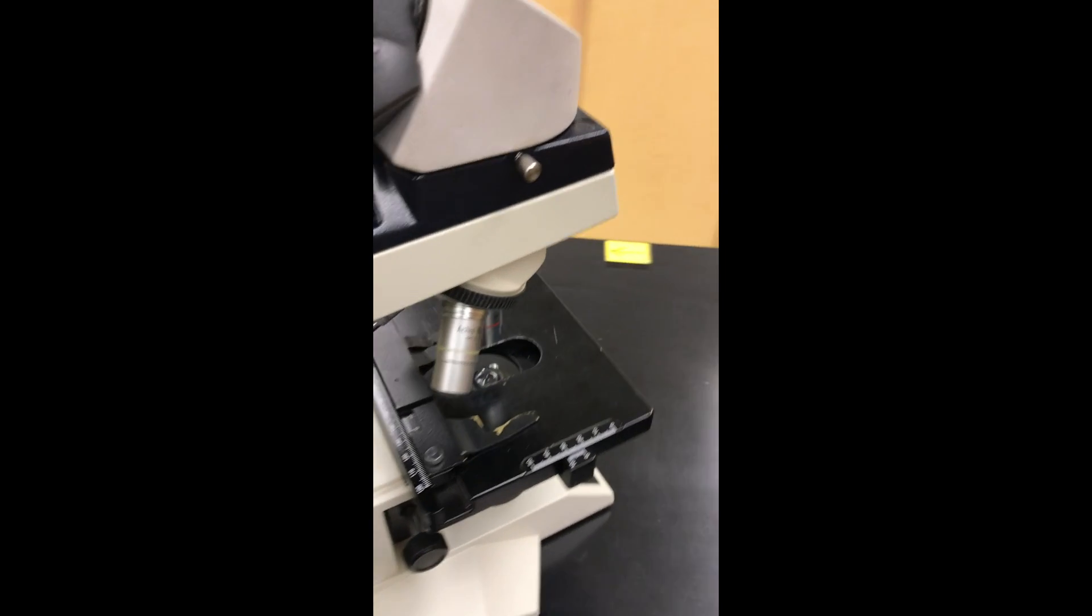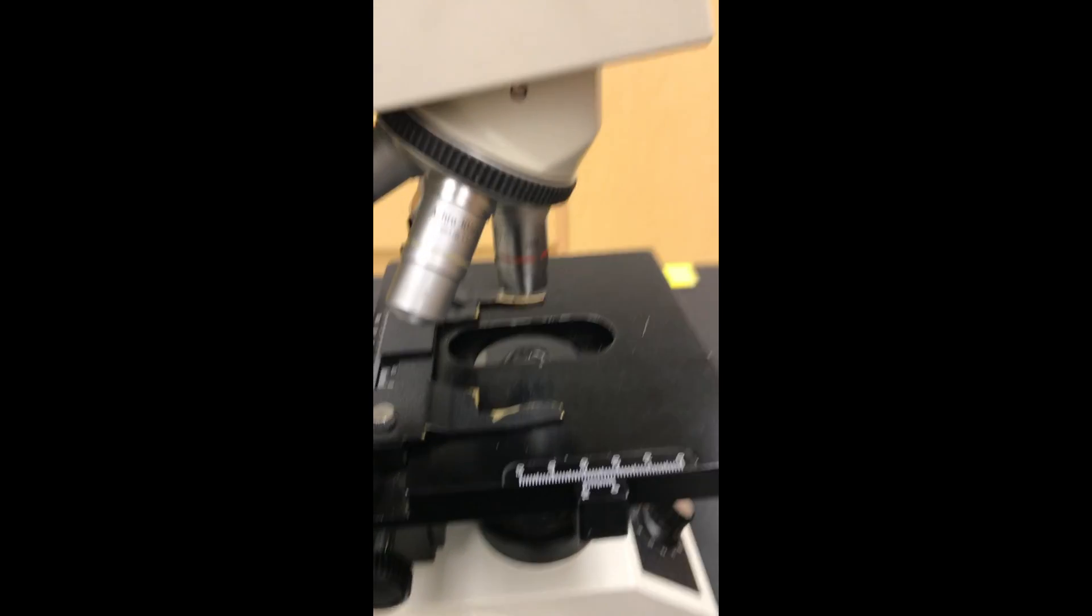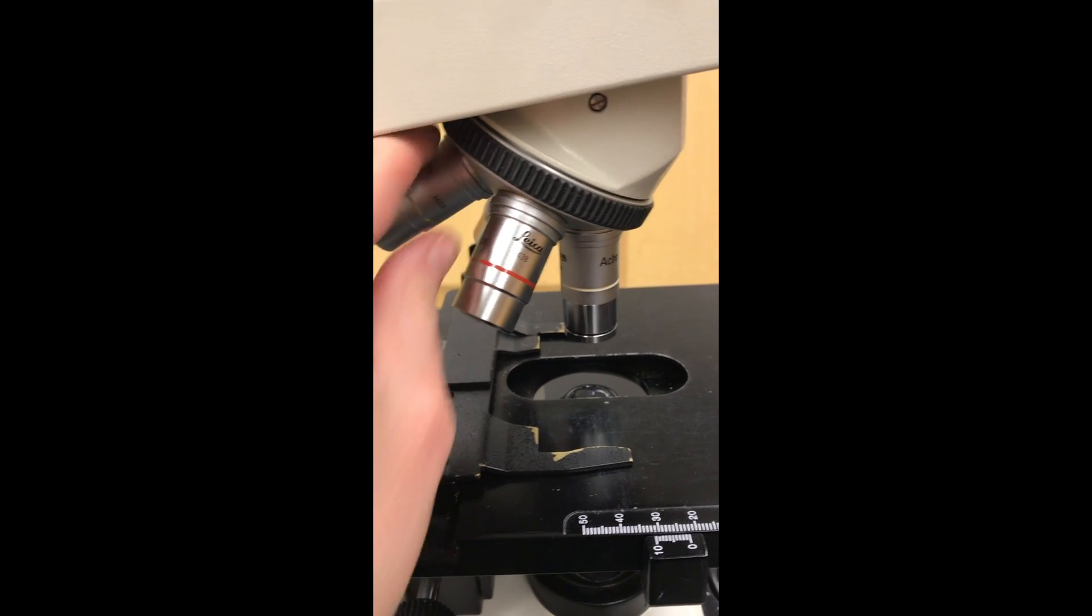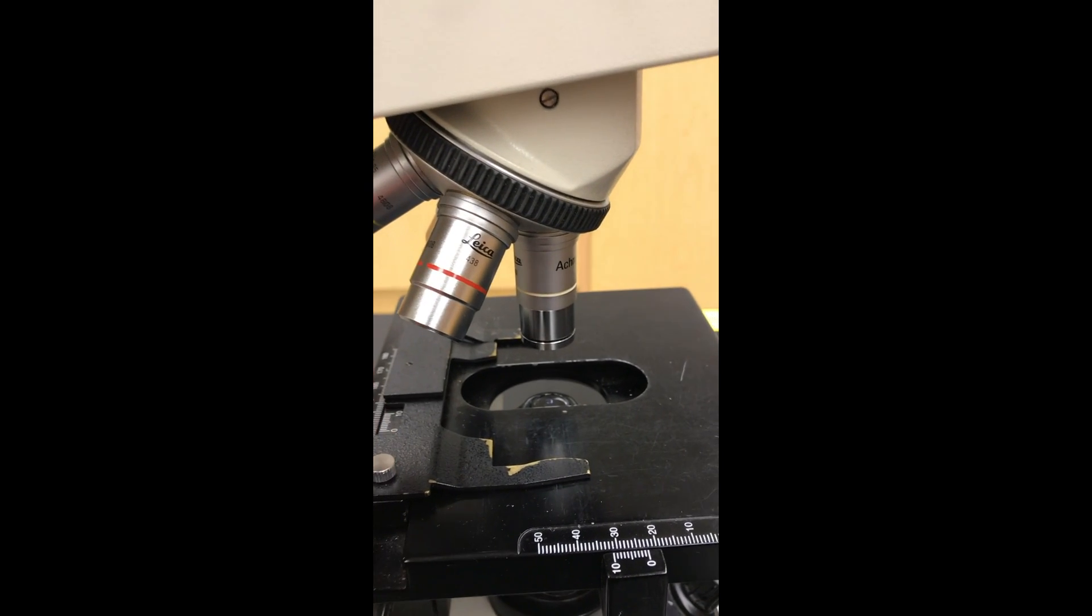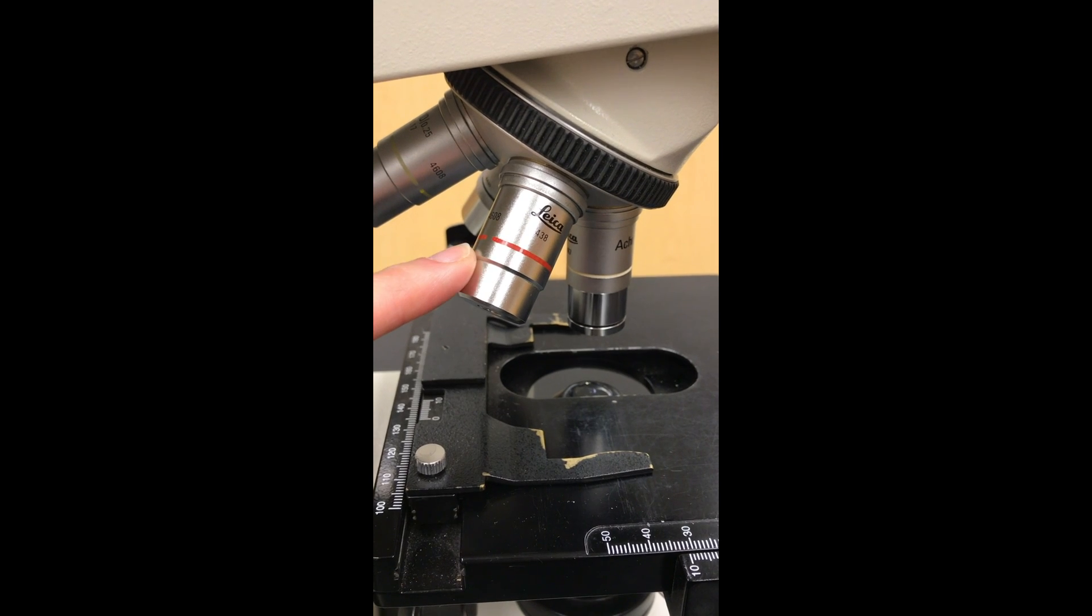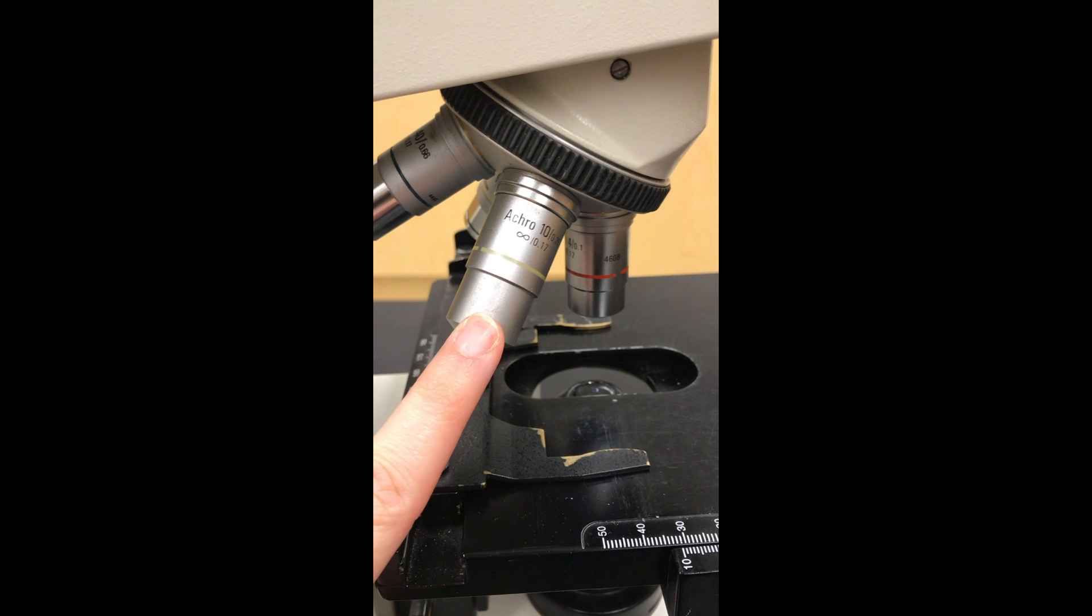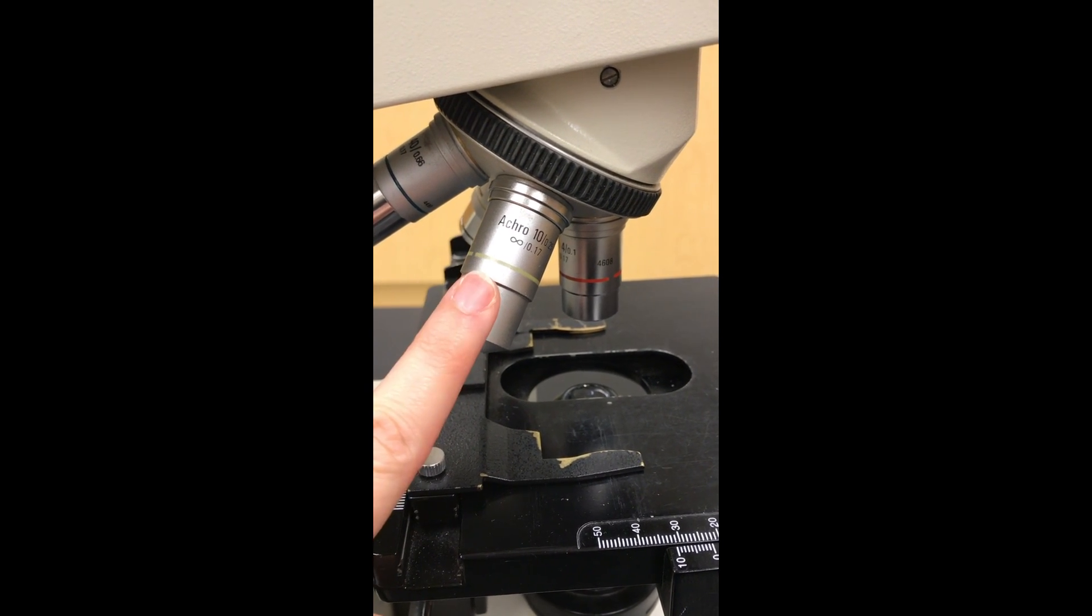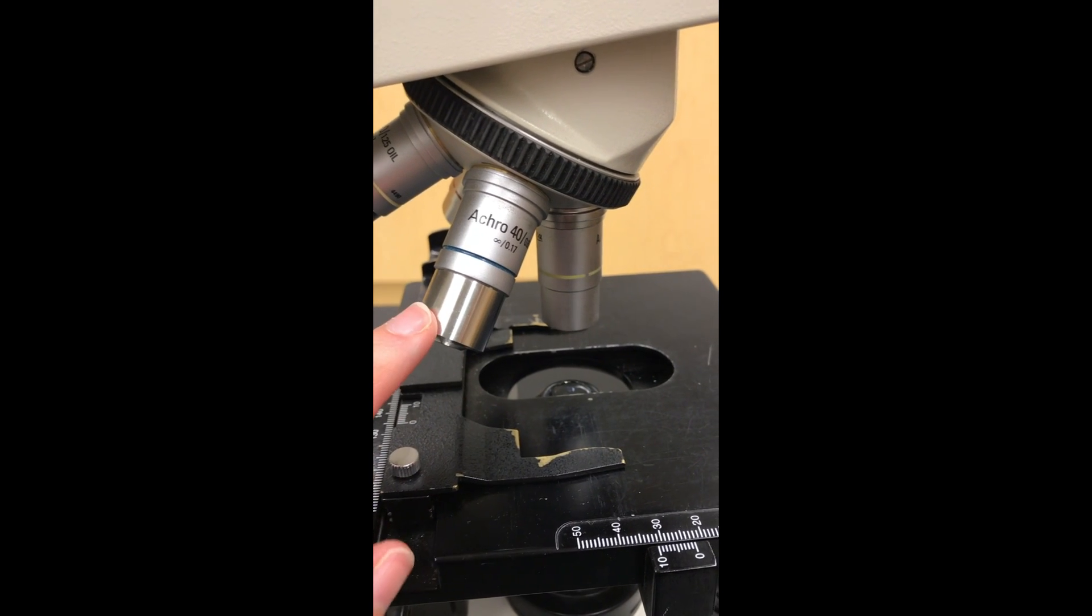Now if we rotate this around to the side, we're going to see our revolving nosepiece. This is where most of the magnification comes from. So we'll go through all these objective lenses, what they are, and then I'll go through how this whole thing works. So this one right here, this red one, this is our lowest power, 4x. That's our highest power.